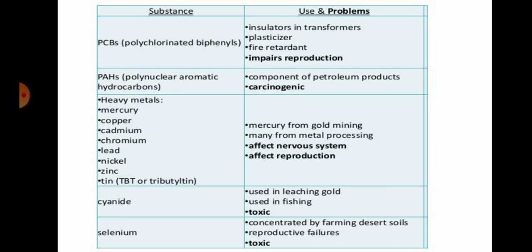Heavy metals such as mercury, copper, cadmium, chromium, lead, nickel, zinc, and tin are used in various ways, for example mercury in gold mining and metal processing. When they accumulate in an organism's body they can affect the nervous system and reproductive system. Cyanide, used in gold leaching and fishing, is very toxic. Selenium, concentrated from farming and desert soils, affects the reproductive system and is also very toxic for living organisms.